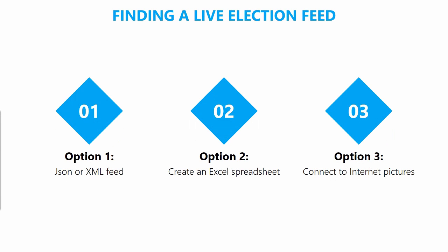To start with, you'll need to find what is going to be your data source for the live election feed. You may be able to find one that is automatically updated through JSON or XML. You can also just create your own Excel spreadsheet, which is a very simple way to do it, or you can connect to an internet picture on an existing website that has a live feed.